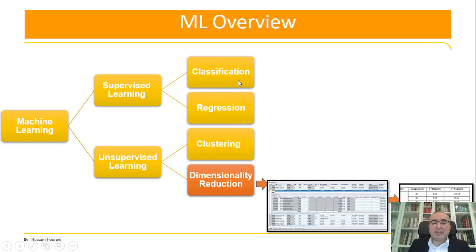We talked about classification and regression under supervised learning, and we covered clustering under unsupervised learning. Today we will talk about dimensionality reduction, which is unsupervised learning — meaning you have data that is not labeled.